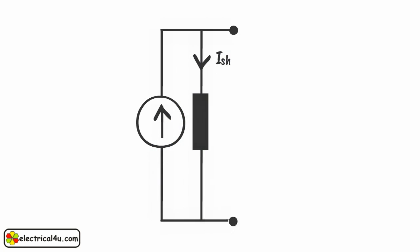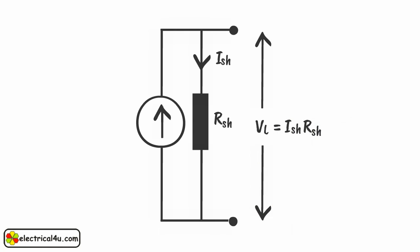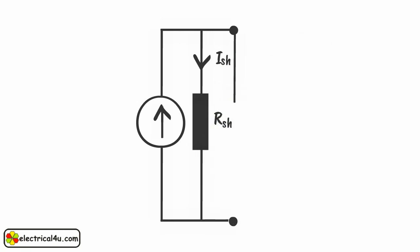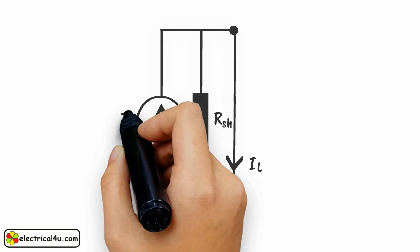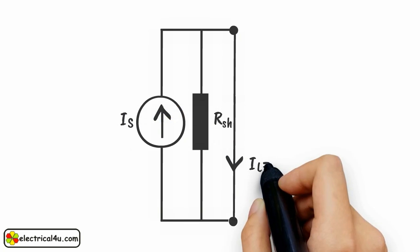In the same way, from this figure, we can write VL at open circuit equals ISH multiplied by RSH. And IL at short circuit equals IS. Hope you got the idea. Thank you.